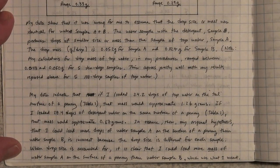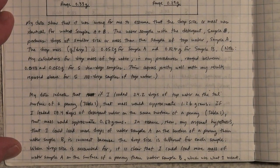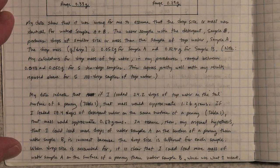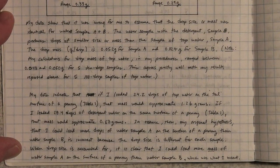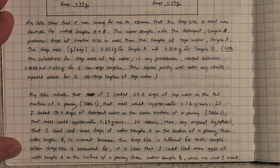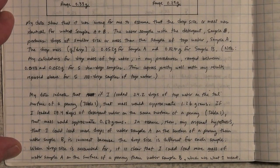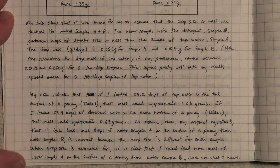In essence, my original hypothesis that I could load more drops of water sample A on the surface of the penny than the other water sample B is incorrect, because the drop size is different for each sample. When drop size is accounted for, it is clear that I can load more mass of water sample A on the surface of the penny than water sample B, which is what I meant.